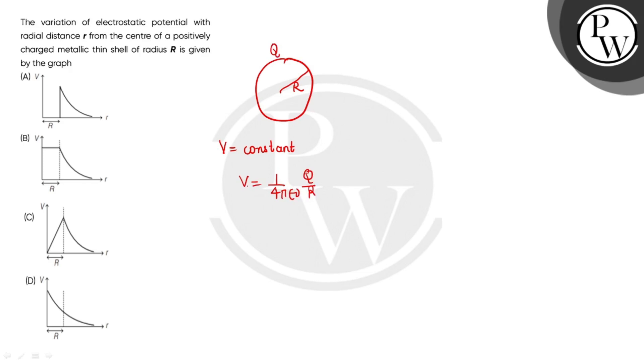The potential inside this will be at the surface. Let's talk about outside point. What will be the potential outside? 1 by 4πε₀ q by r. This is our outside point. Outside is inversely proportional to small r and inside is constant.